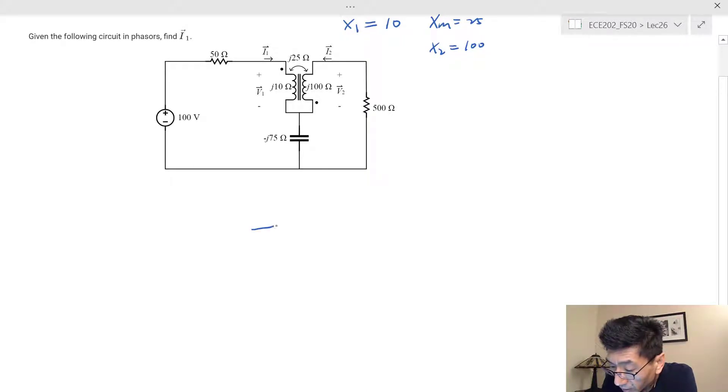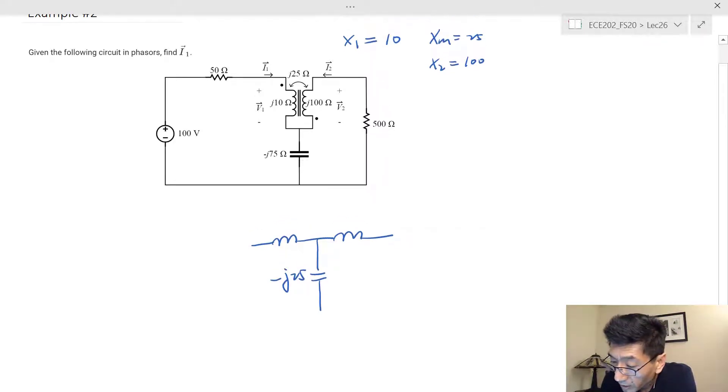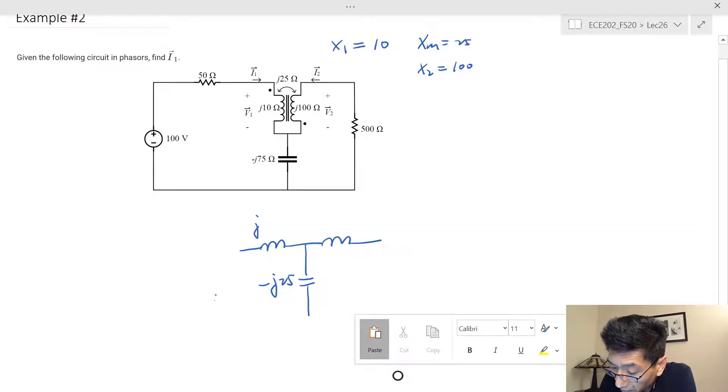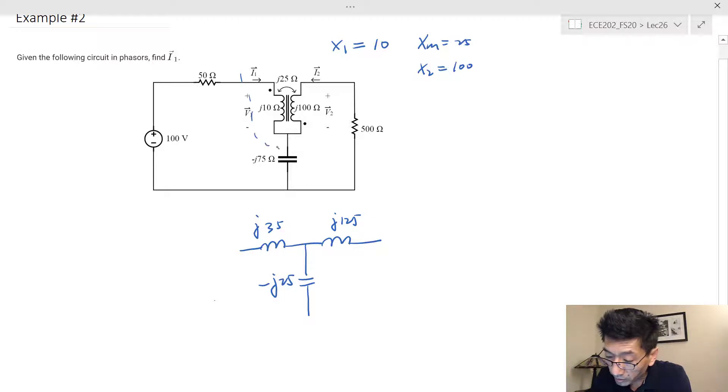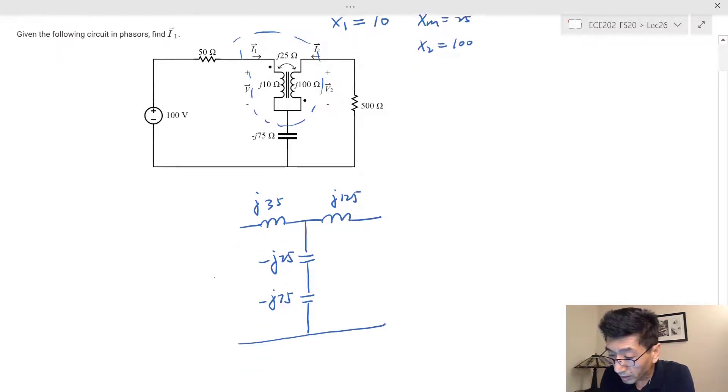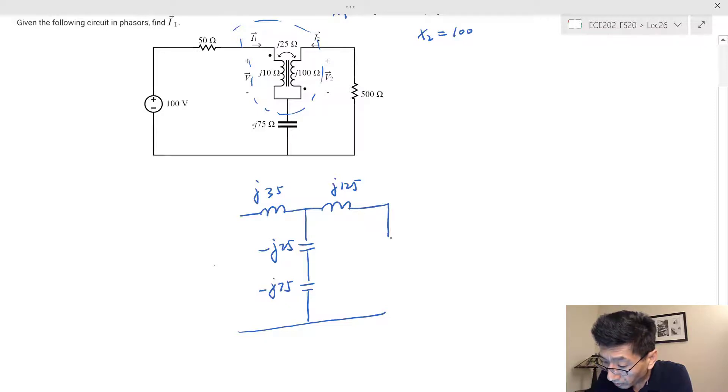Let's just redraw the circuit. We draw the circuit for the linear transformer, then we draw the rest. This one is going to be equal to negative j*Xm, which is negative j25. Xm is 25. We have j*(X1 + Xm), which is j35, and we have j125. These are the equivalent circuit for this linear transformer here. We're going to just need to complete the circuit of the rest. We have j75 and the 500 ohms.